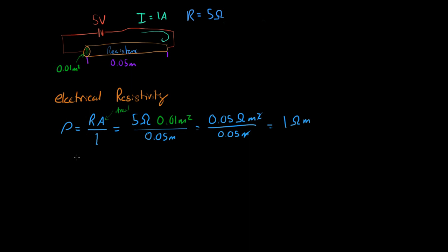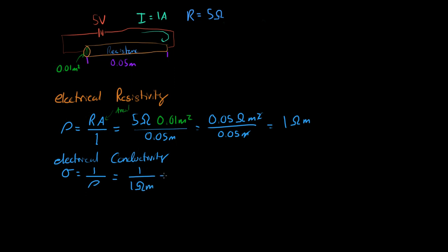To find the electrical conductivity — that's sigma — the electrical conductivity is just the inverse of the electrical resistivity. So the electrical conductivity is equal to 1 over 1 Ohm meter, which simplifies to 1 Ohm meter to the power of negative 1. So we found the electrical conductivity along with the resistance using Ohm's law.